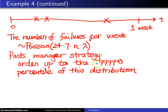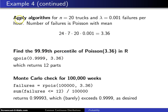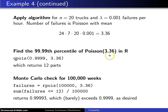If we can figure out the 99.99th percentile of this Poisson random variable, we will have the number of parts to order up to. Here is the algorithm. For example, with n equals 20 trucks and lambda equals .001 failures per hour, the number of failures in a week is Poisson with mean 24 times 7 times 20 times .001, which gives 3.36 failures per week. We want the 99.99th percentile of a Poisson(3.36) distribution in R, using the qpois function with first argument .9999 and second argument lambda equals 3.36. This returns 12 parts.